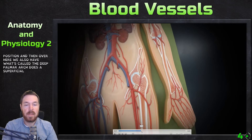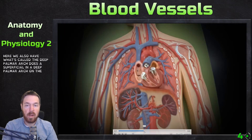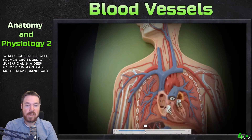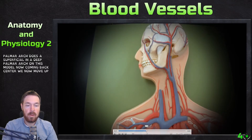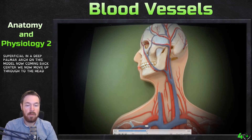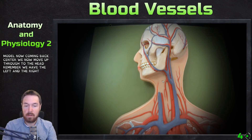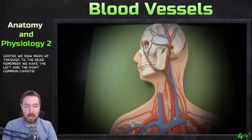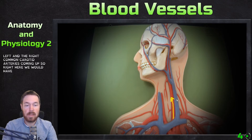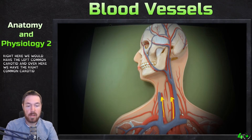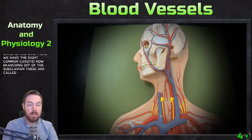Coming back to center, we move up through to the head. We have the left and right common carotid arteries coming up — here is the left common carotid and over here is the right common carotid. Also branching off of the subclavians are the vertebral arteries.